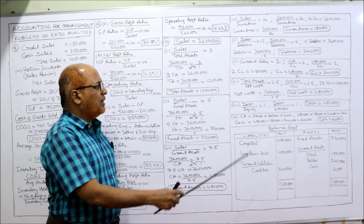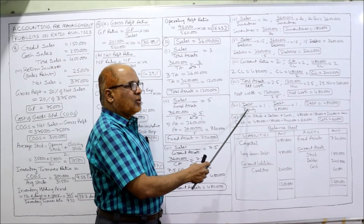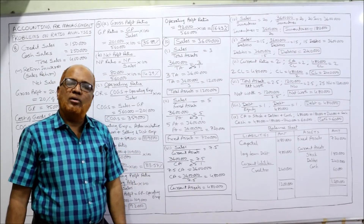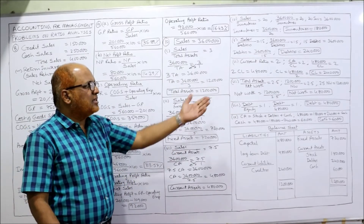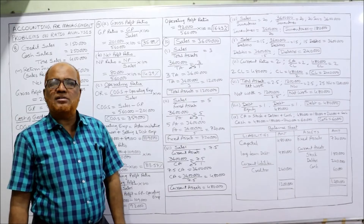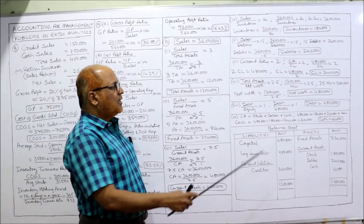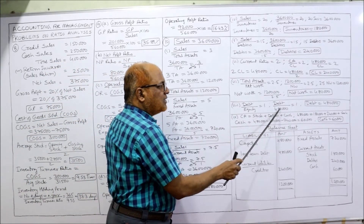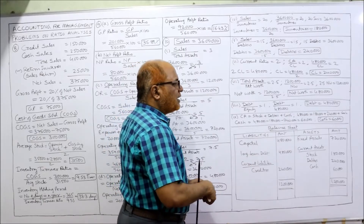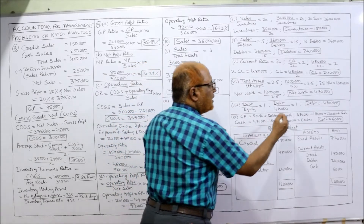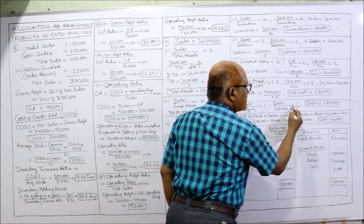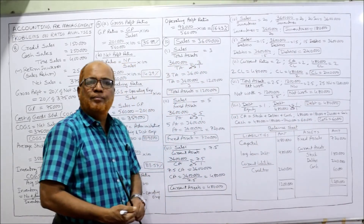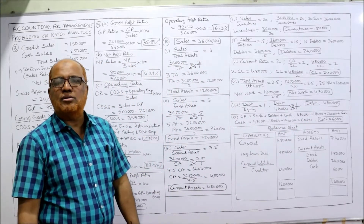Last ratio: debt by equity = 1. Debt means long-term debt and equity means net worth. So debt divided by net worth of 4,80,000 = 1. Cross multiply: long-term debt = 4,80,000.